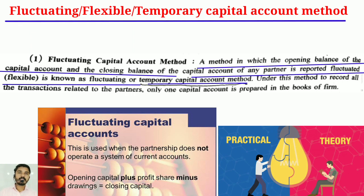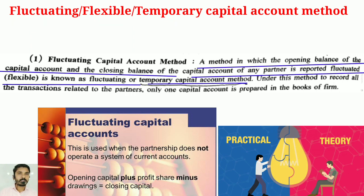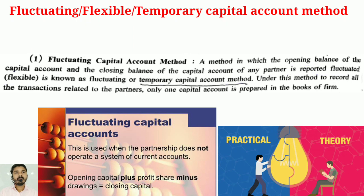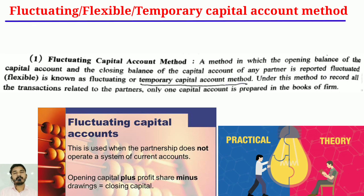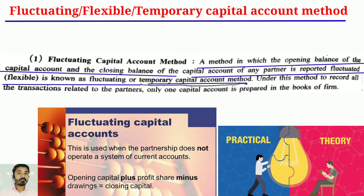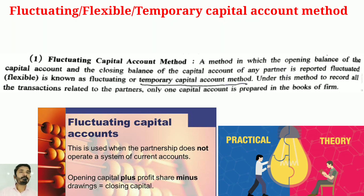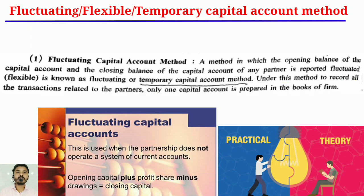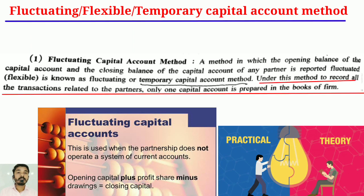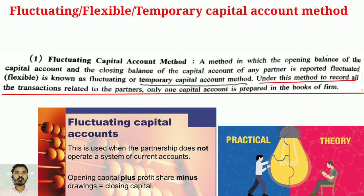The opening balance and closing balance both fluctuate, meaning they are flexible — it is a temporary capital account. Under this method, to record all transactions related to the partner, only one capital account is prepared in the books of the firm.